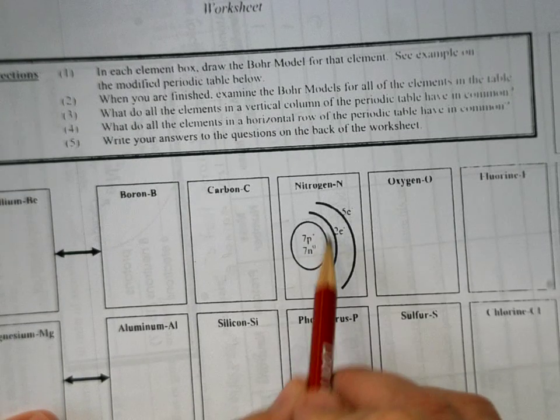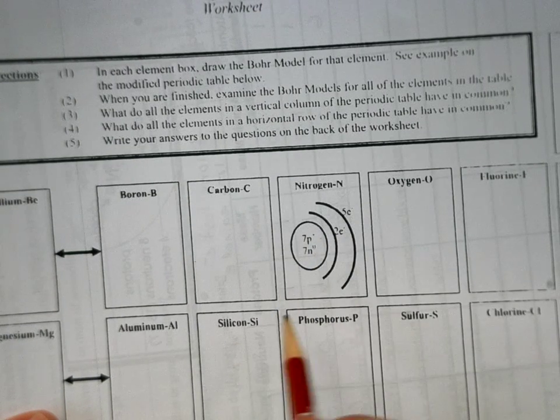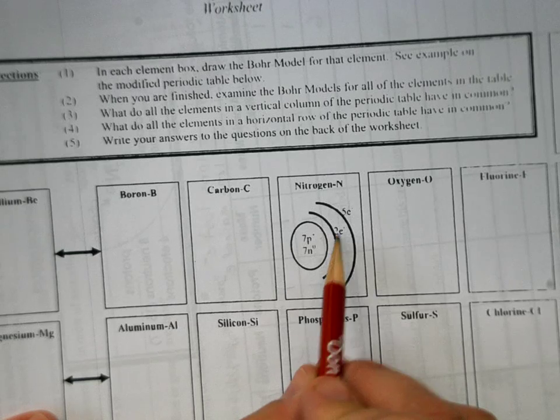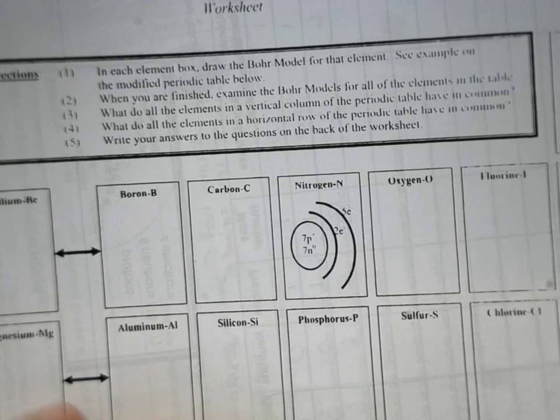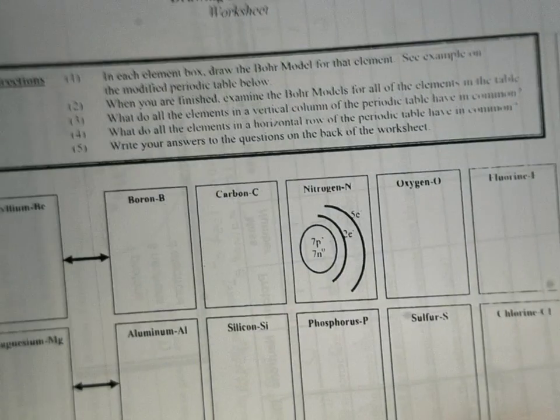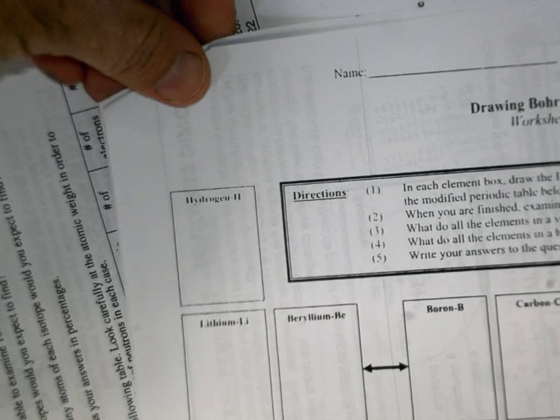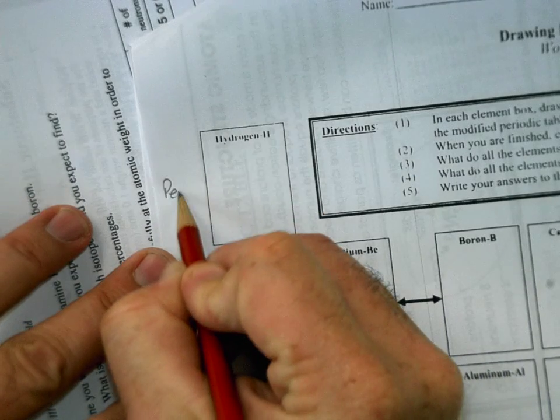And then we're going to draw out the shells that they have, and we're going to put how many electrons they have in their outer shells. So let's come on over here. First off, to do this, let's label this period one.